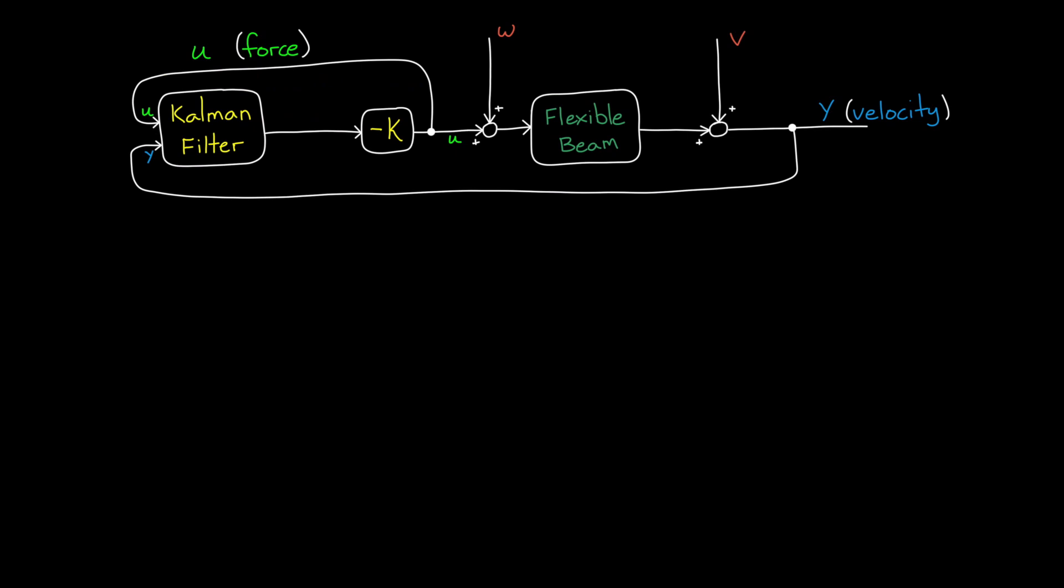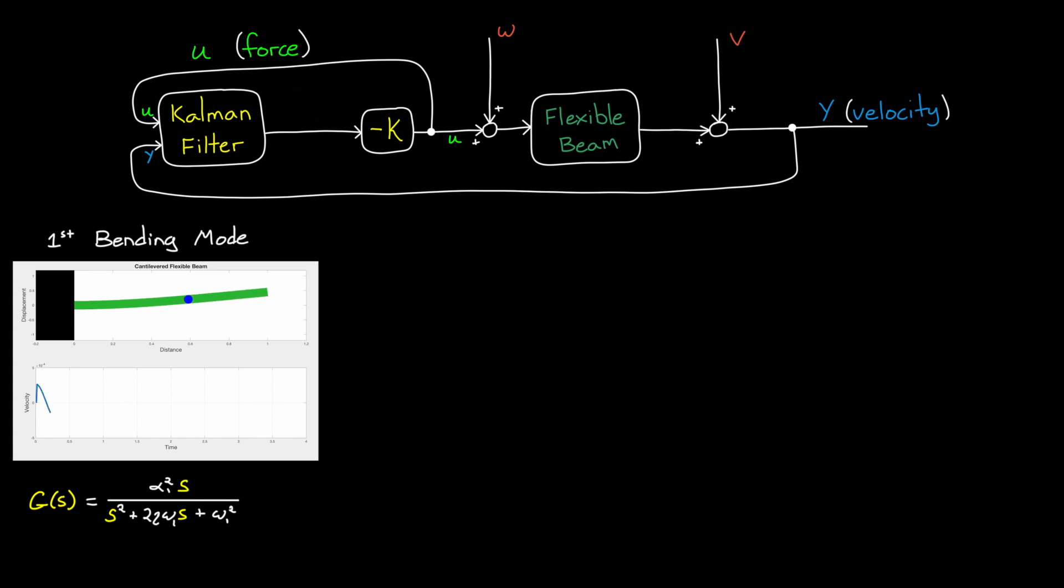An LQG controller is the combination of an LQR controller to minimize a quadratic cost function that takes into account system performance and actuator effort, and a Kalman filter to estimate state in the presence of measurement and process noise. Both of these concepts are covered in other Tech Talk videos linked in the description, so I'm not going to go into detail here. To build this controller, we need a linear model of the flexible beam.